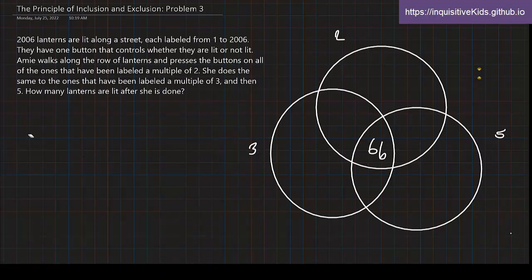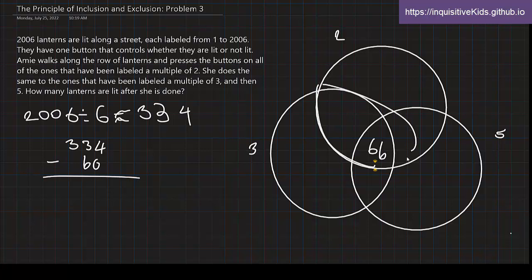Now, we find the parts that have been counted twice. So 2 and 3 have an LCM of 6. And 2006 divided by 6 is 334, with a remainder of 2. We subtract 66 from 334, because that's already been counted. 2 and 3 overlap is this shape right here, but 66 has already been counted. And this is 168 for us. So this is 168.